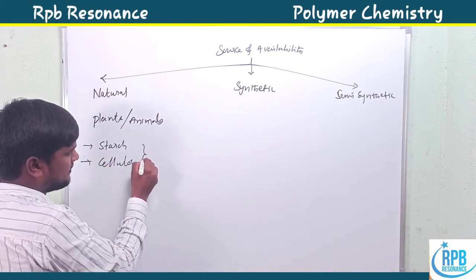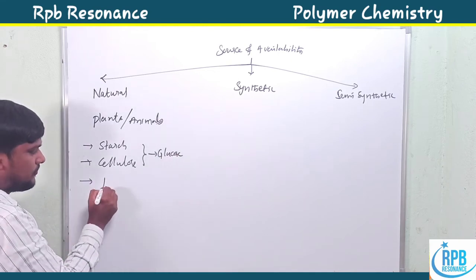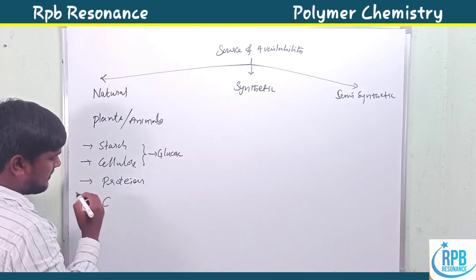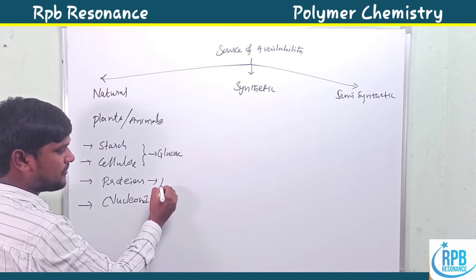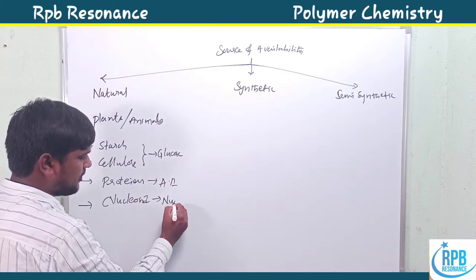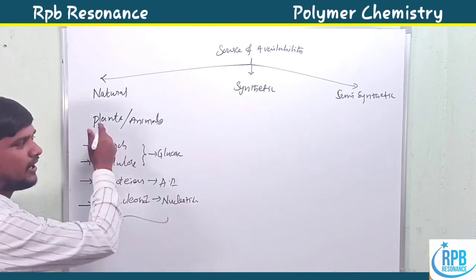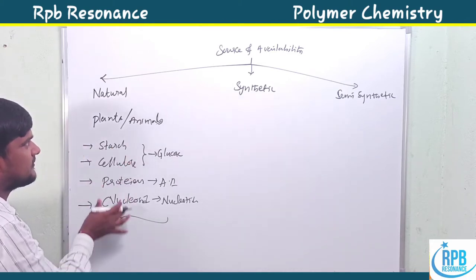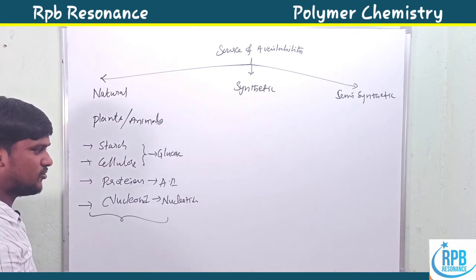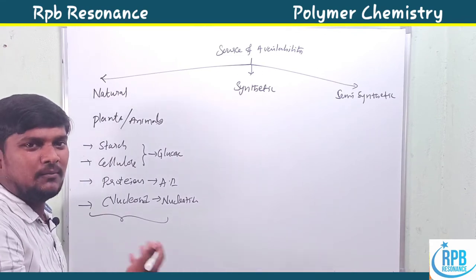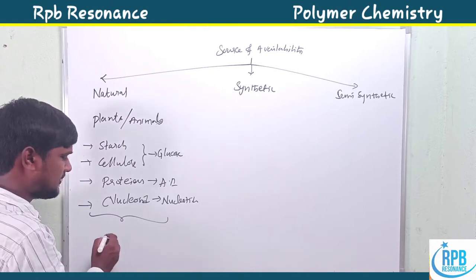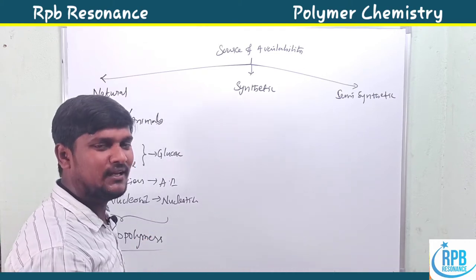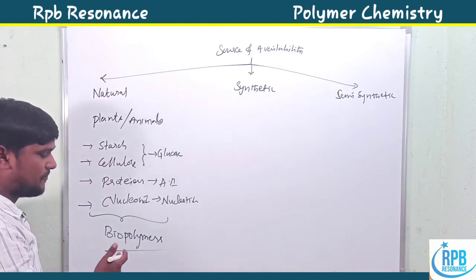Proteins are polymers of amino acids, and nucleic acids are polymers of nucleotides — these are all natural polymers obtained from animal or plant sources. Natural polymers used in living bodies are simply called biopolymers — polymers present in any living organism are called biopolymers.